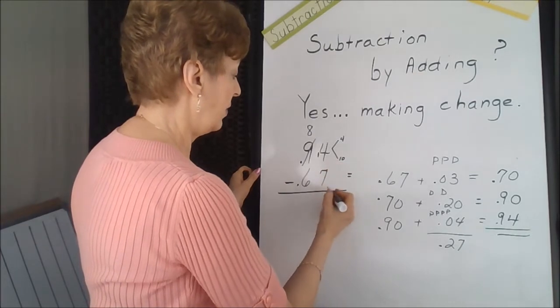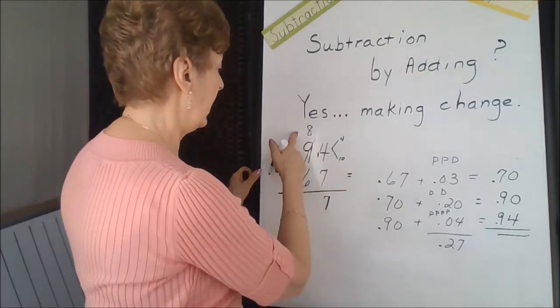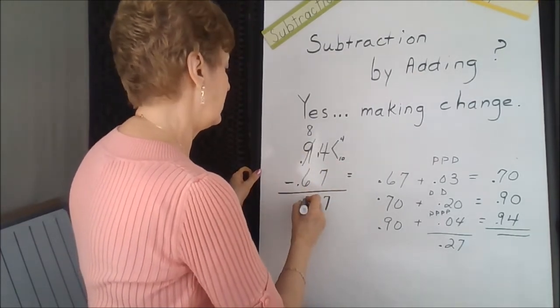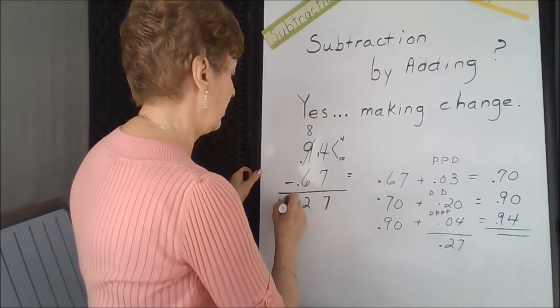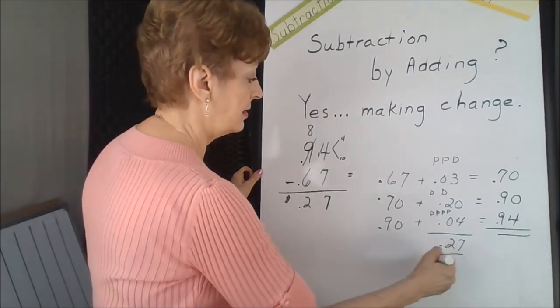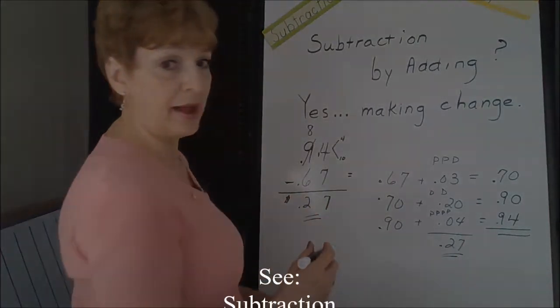14 take away seven is seven. 8 take away six is two. There I have the 27 cents left in my pocket.